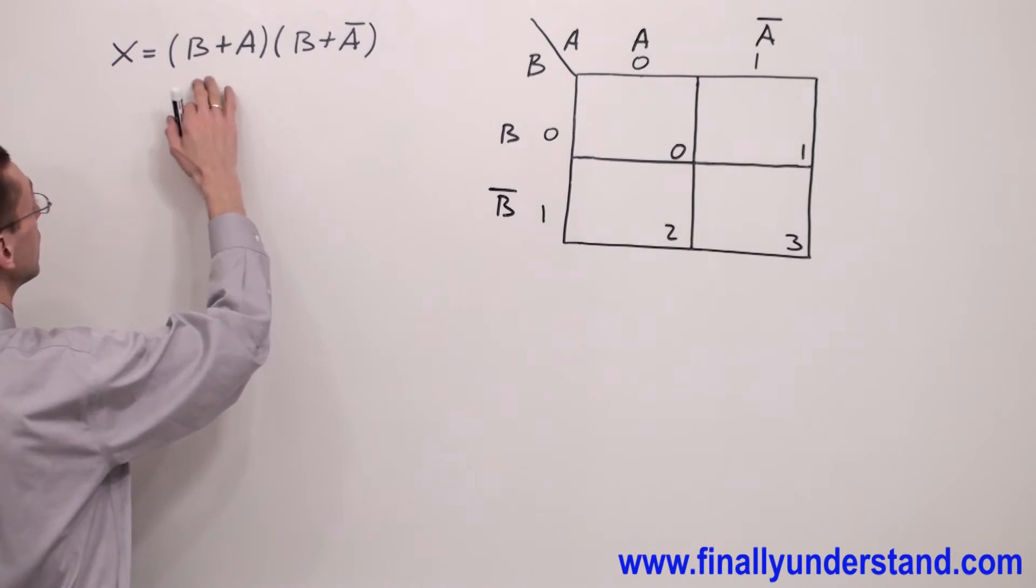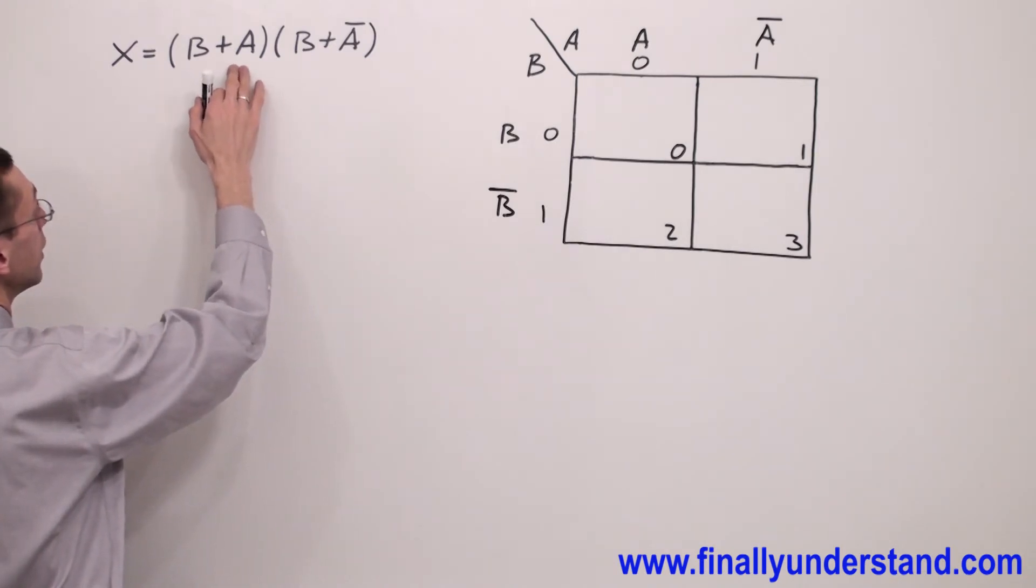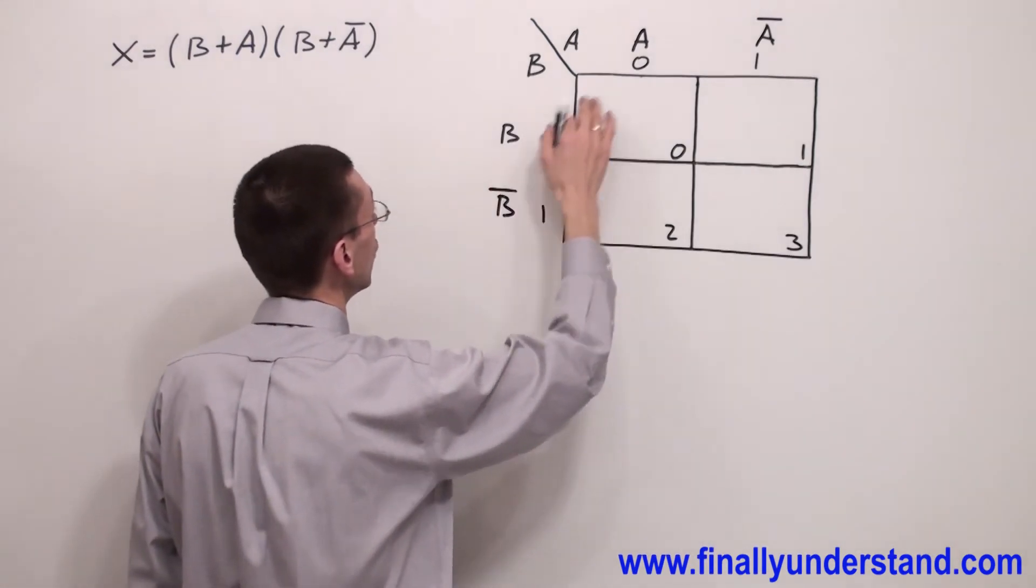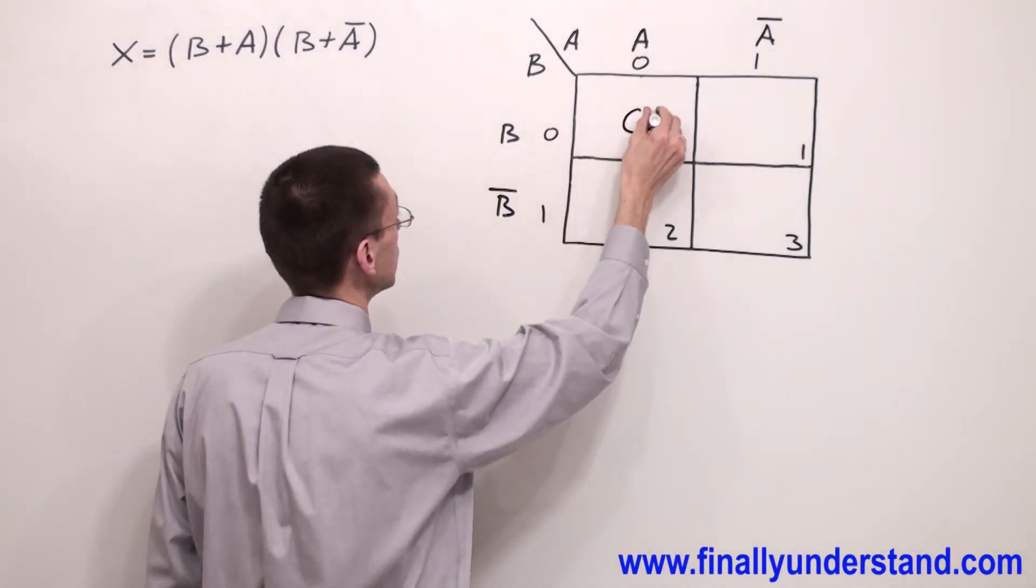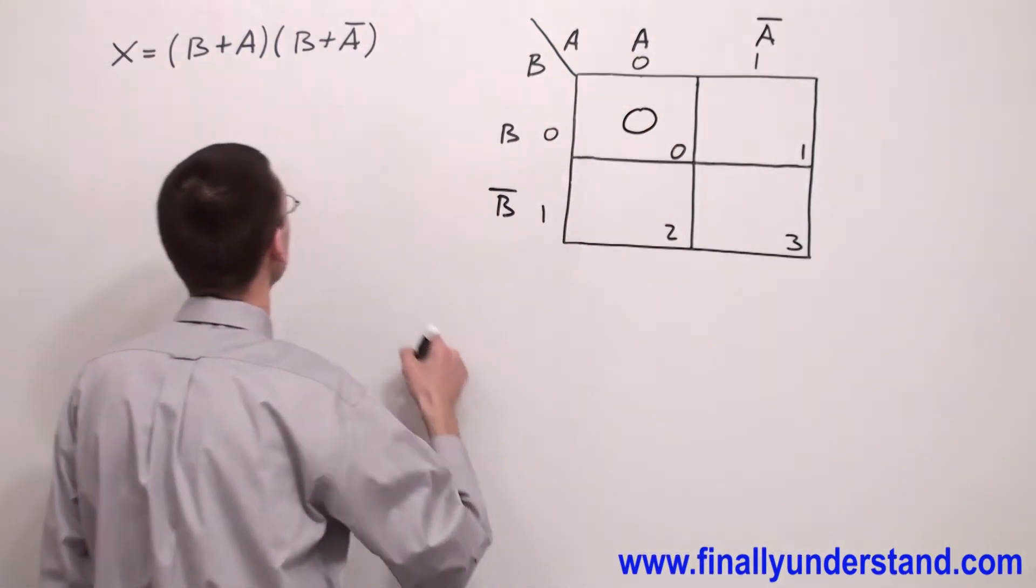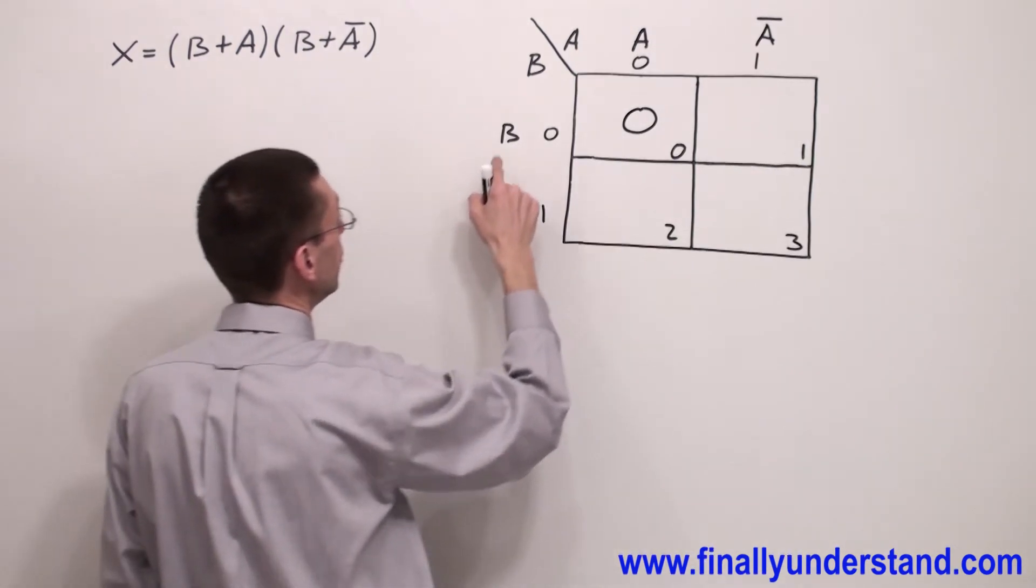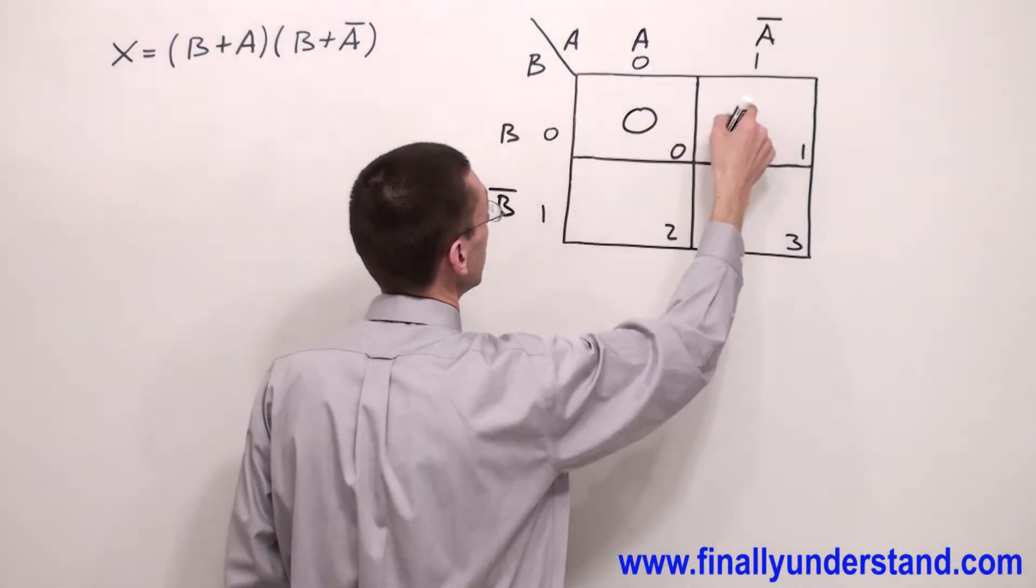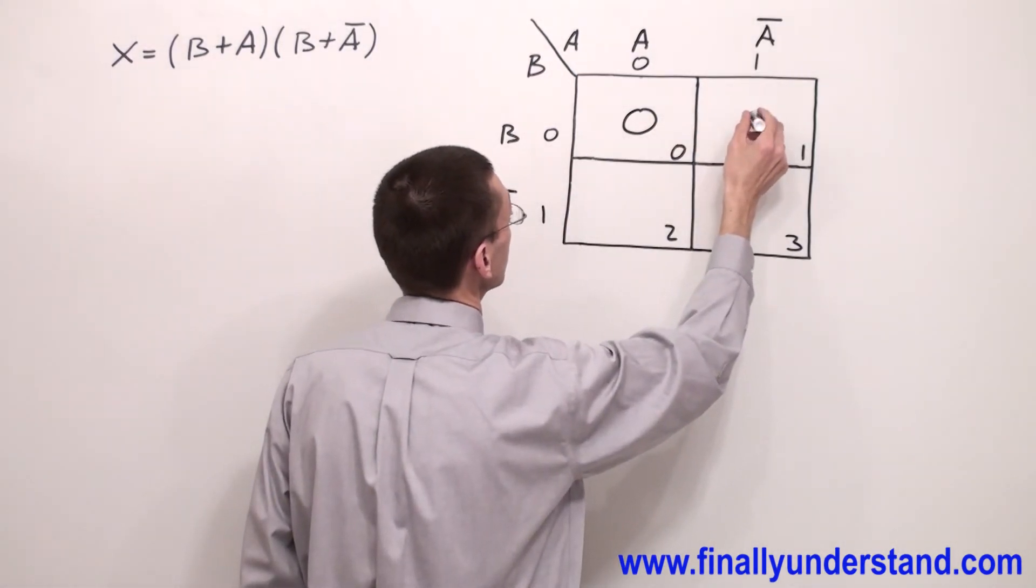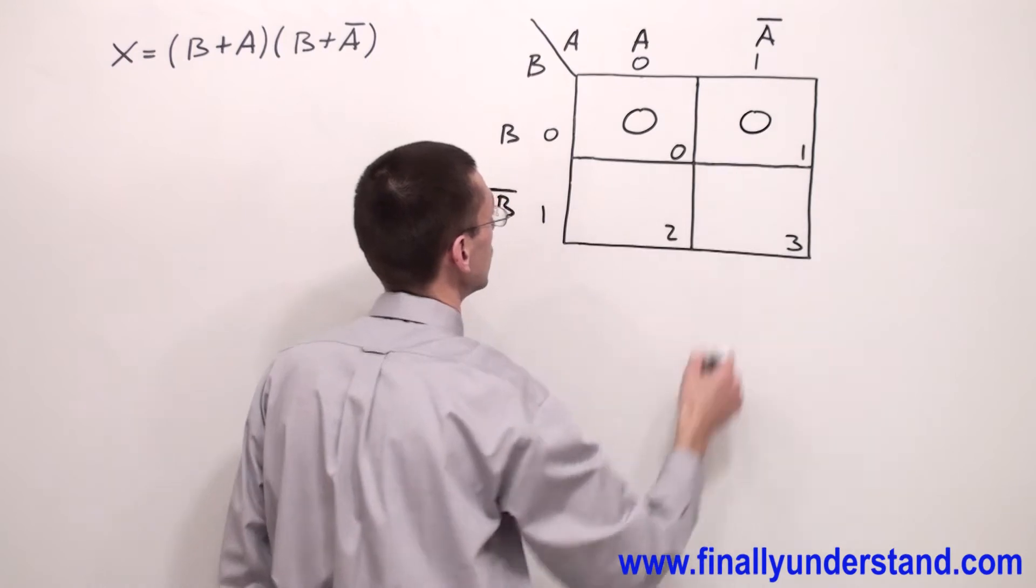Next look at the problem. I have B+A. I have to write 0 in this cell. Next I have B+Ā. So I'm going to have another 0 here.